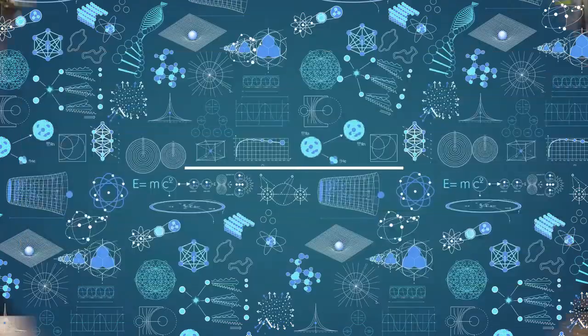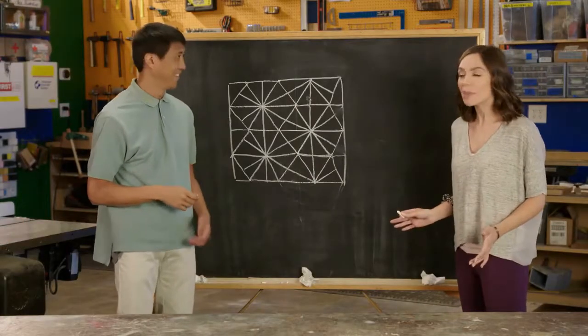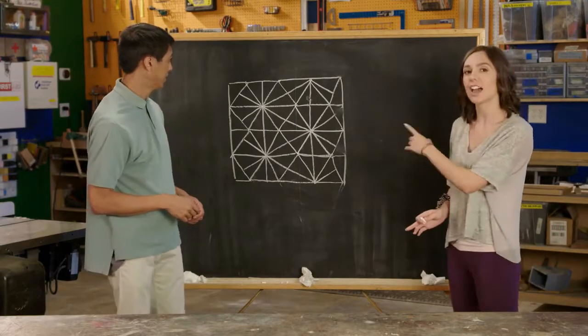Wow, that's a lot of triangles. But I love that you can still see the hexagons too. Maybe we should finish the rest of this over at the table.